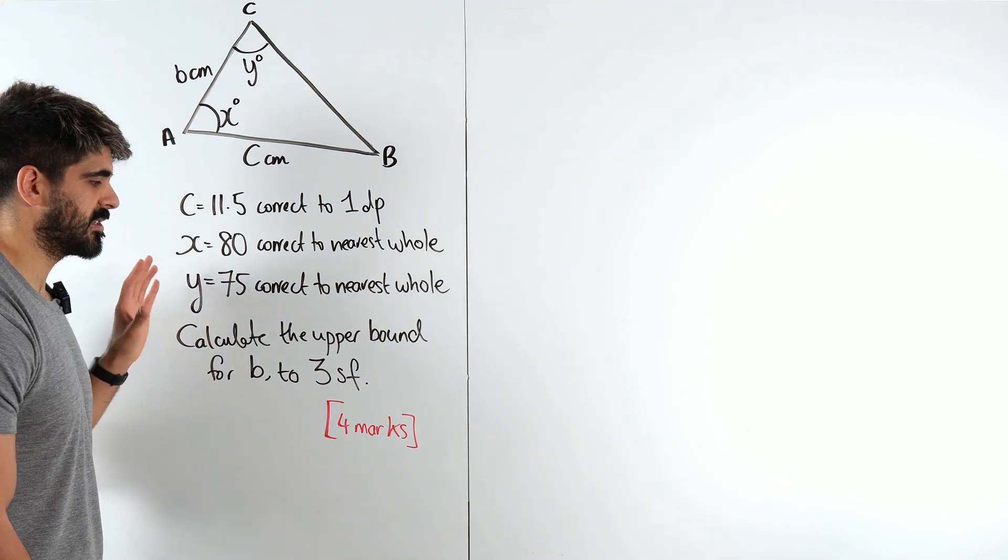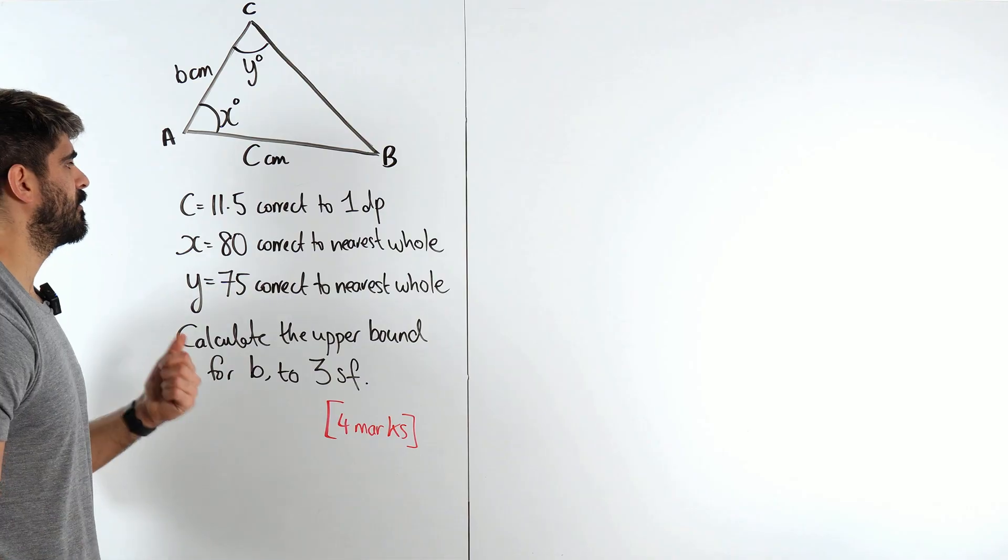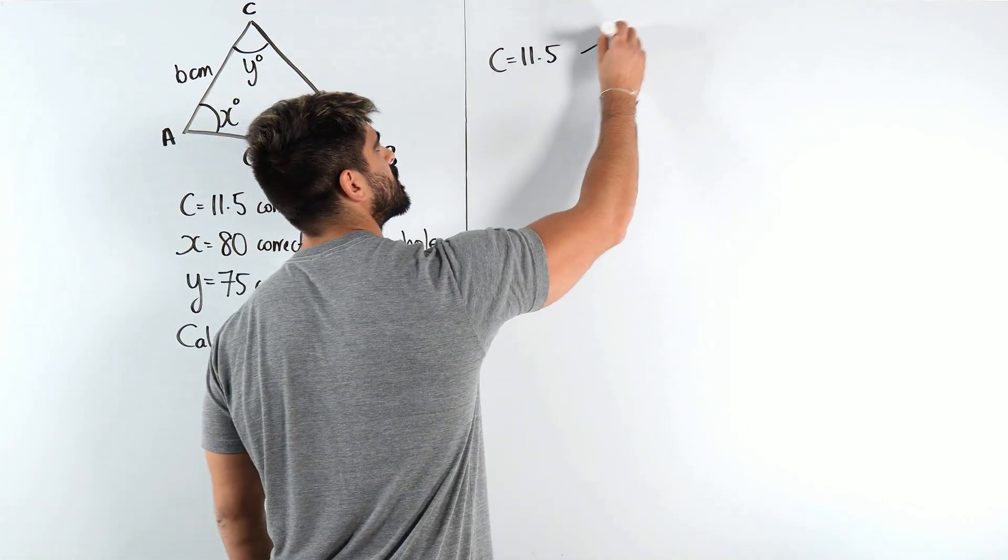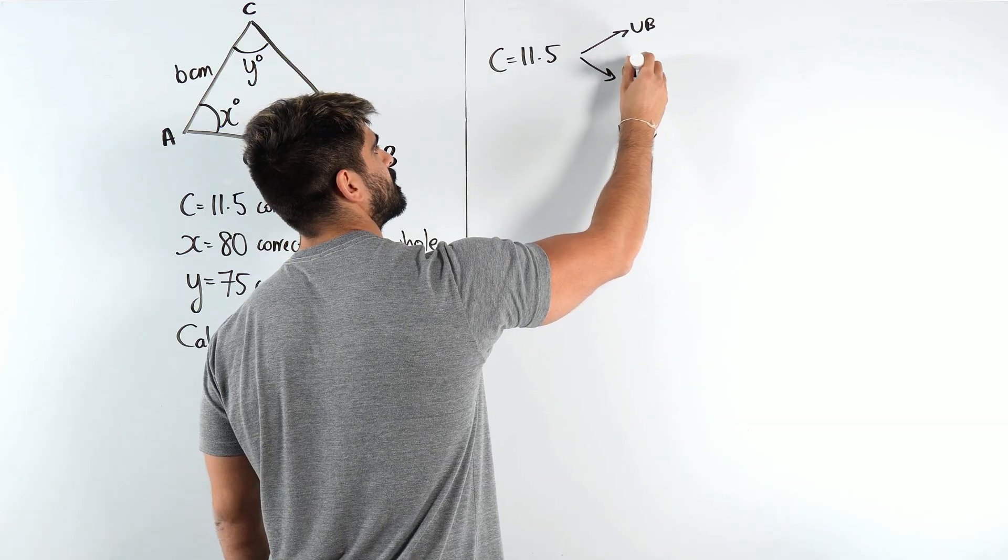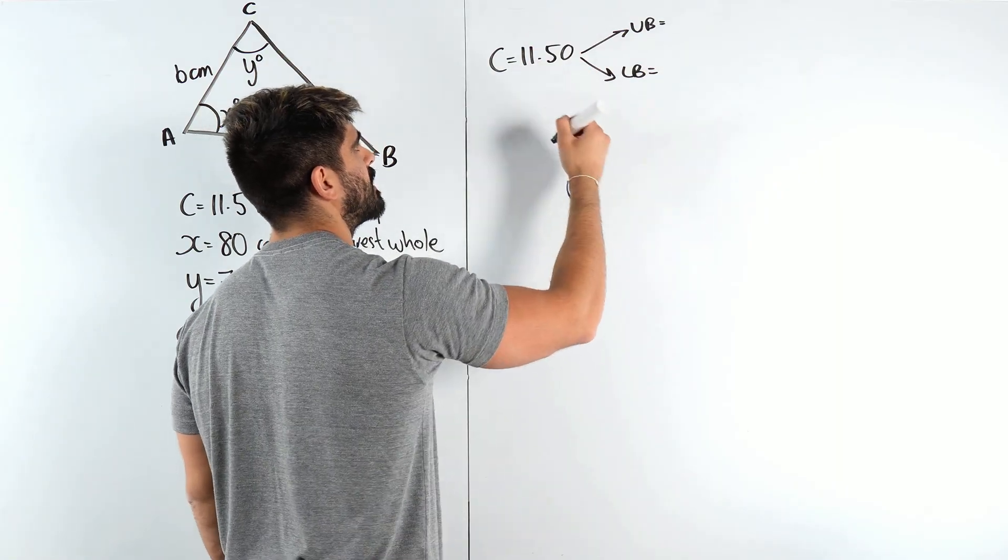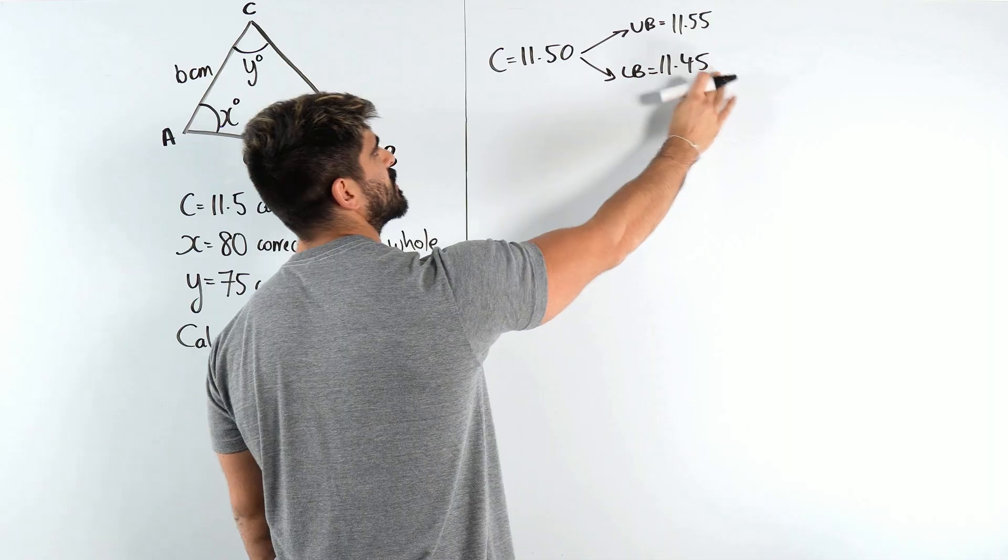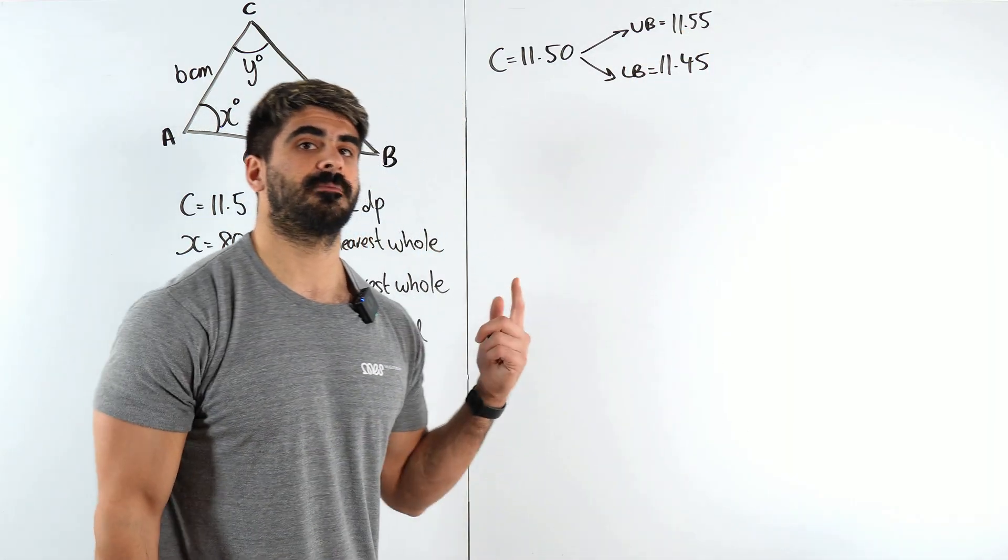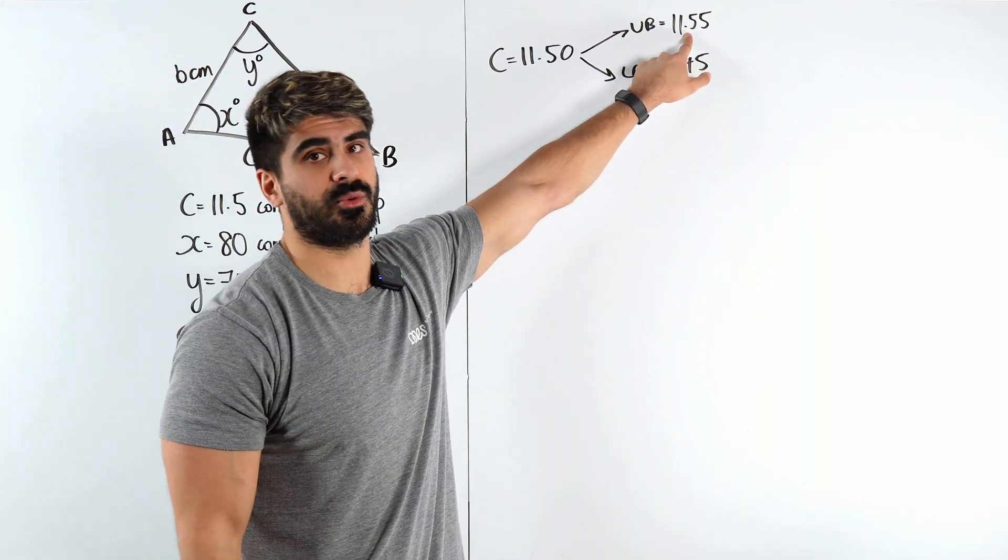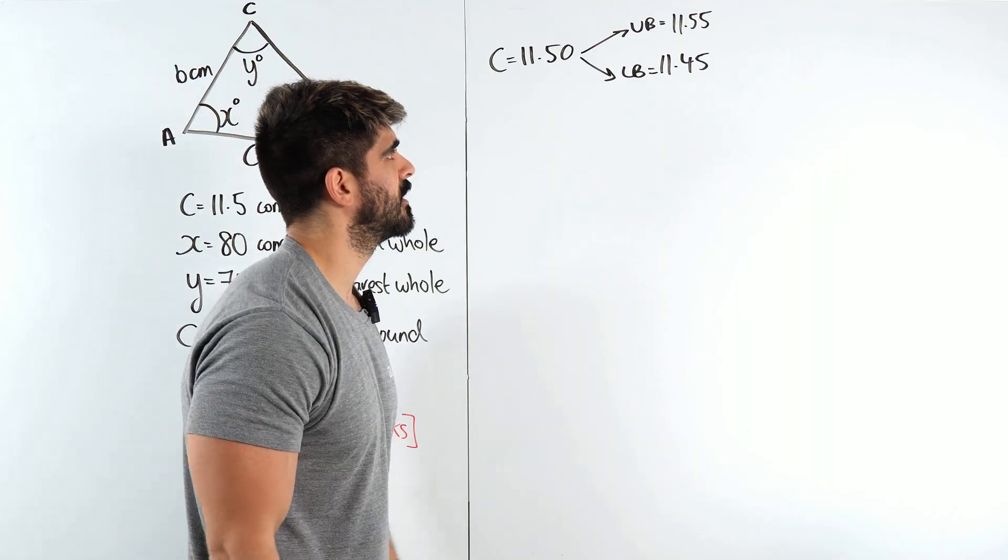The first thing we should always do to make sure we secure some marks is to write down what the biggest and smallest values of all of these could be. So c is 11.5 correct to one decimal place. We're going to calculate the upper bound and the lower bound. What's the easiest way to find the upper and lower bound? Write 5 as 50 and add and minus 5. So it'll be 11.55 and then 11.45. 11.45 is the smallest possible number which would still round to 11.5. Now 11.55 is the largest number, but it can't equal 11.55 because that actually rounds to 11.6.